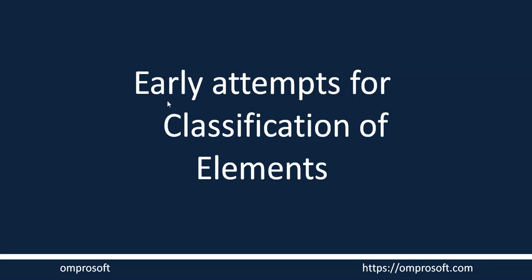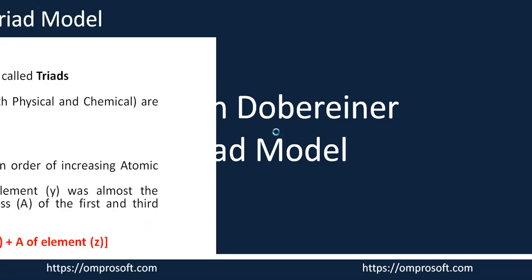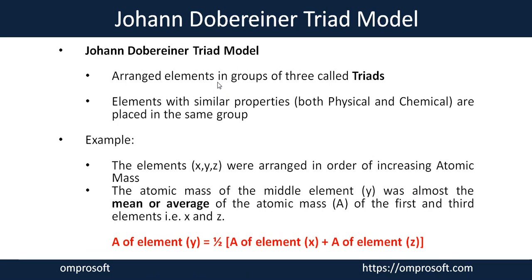In this session we are going to discuss about early attempts for classification of elements. First we discuss about John Döbereiner's Triad model. John Döbereiner was a chemist in the early 18th century, when scientists were trying to solve the mystery of how to arrange all the discovered elements in a tabular manner. At that time, John Döbereiner came up with his Triad model.